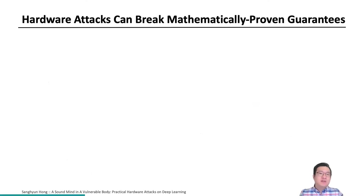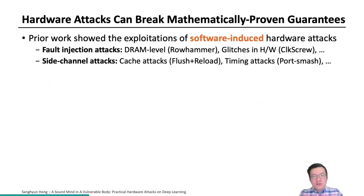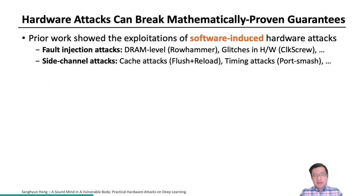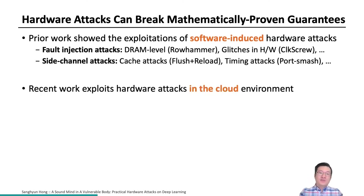What makes hardware attacks interesting is that those attacks can breach mathematically proven security guarantees. In fact, prior work shows the exploitation of hardware attacks against cryptography, such as fault injection attacks or side-channel attacks. But it is important to know that this is not because crypto algorithms are weak — it's because hardware attacks were outside of their threat models. But one might say: isn't it difficult to perform hardware attacks on local machines? You need to break network defenses and have the victim download and run your malicious software. However, there is an environment where an adversary may not face such challenges: the cloud. Because of this reason, many exploitations of hardware attacks have been shown in the cloud.